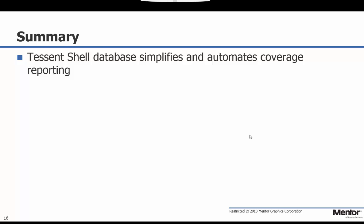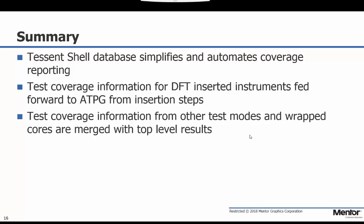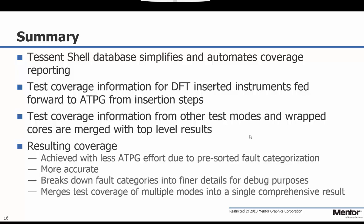In summary, the Tessent Shell database simplifies and automates the task of consolidating test coverage information from multiple sources into a single report. It does this by forwarding coverage information for DFT instruments to the ATBG step and merging the test coverage information of multiple cores and multiple test modes. The resulting coverage is achieved with less ATBG effort, is more accurate because faults that may be ATBG untestable can be counted as detected by implication, includes fault categories broken down into finer subcategories to help with debug, and consolidates multiple sources of fault coverage information into a single report.